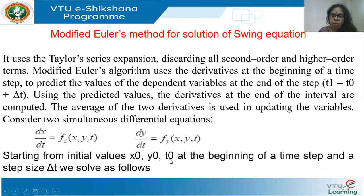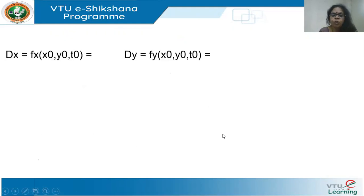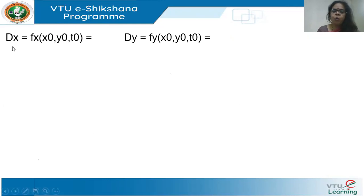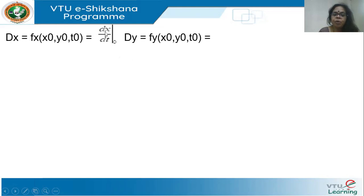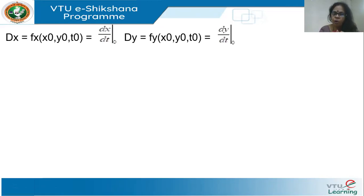Modified Euler's uses the following equations. We take x-naught, y-naught, and t-naught as the beginning of a particular time step, with delta-t as the time step. First, we find dx and dy: dx is the derivative of x with respect to t, and dy is the derivative of y with respect to t. Both are functions of x, y, and t. We evaluate them using values x-naught, y-naught, and t-naught, denoted as (dx/dt)₀ and (dy/dt)₀. So we start with an initial set of values at time t-naught and compute dx and dy.